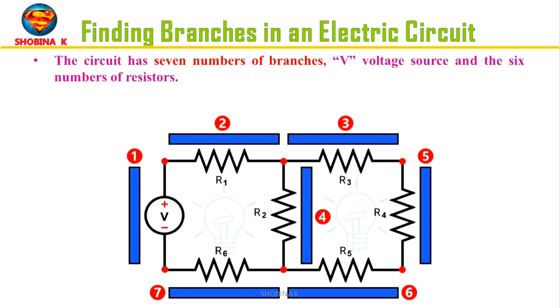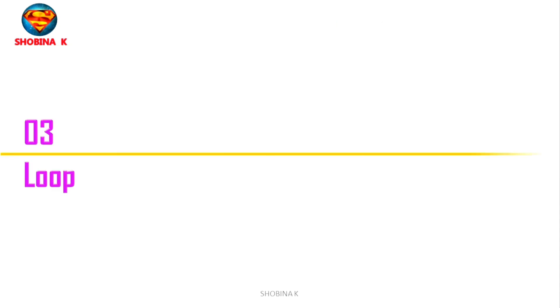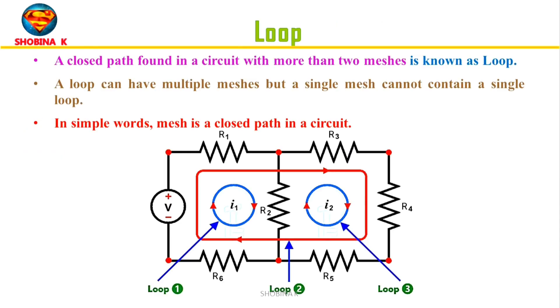Now consider the figure. It has seven number of branches - that is the V voltage source and the six number of resistors. All the branches are highlighted as a blue colored horizontal bar over it.